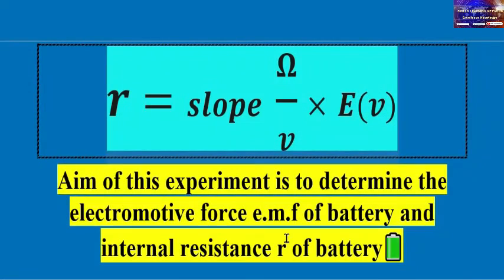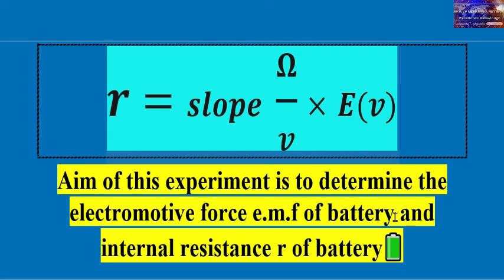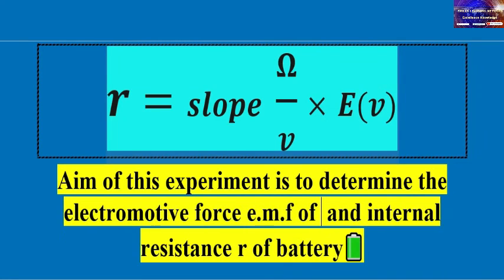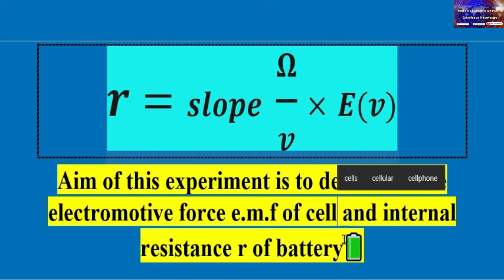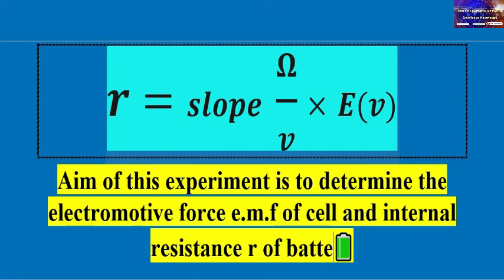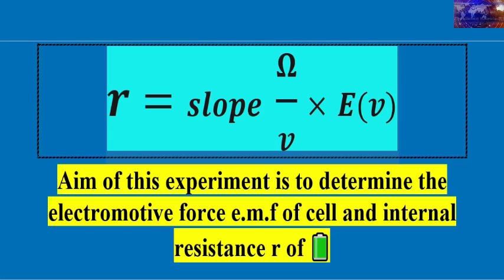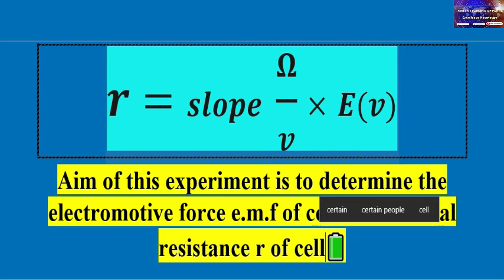The aim of this experiment is to determine the electromotive force (EMF) of a cell and the internal resistance of a cell. That is our experiment number six.